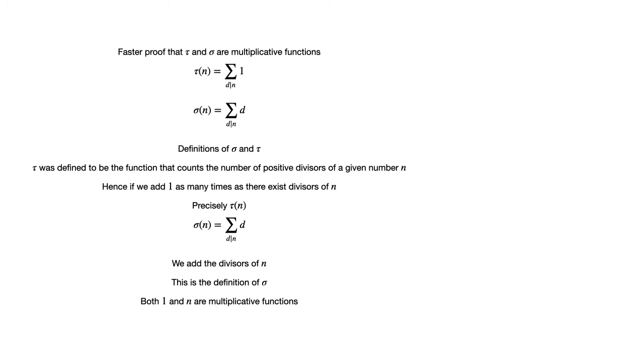The next step and the most vital one is to realize that both 1 and n are multiplicative functions. Indeed, let f of n equal 1 and g of n equal n. For coprime m and n, f of mn equals 1 but f of m and f of n are also 1 so that f is multiplicative. A similar exercise completes the proof for g.